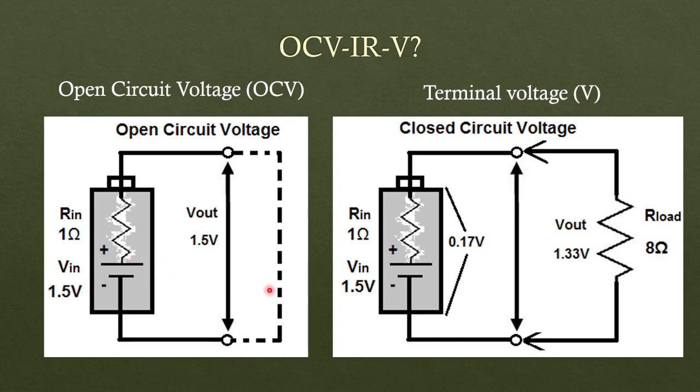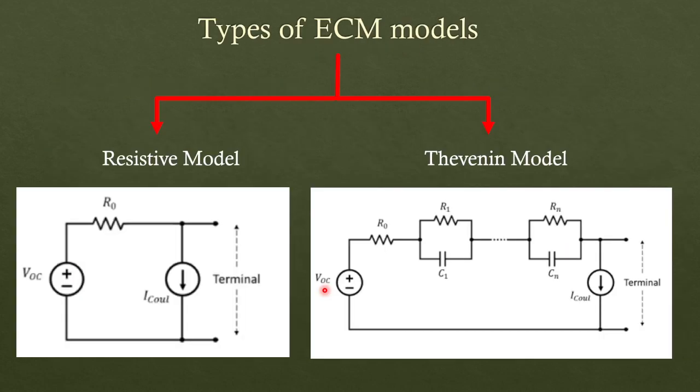Now let's talk about ECM, which is electrical equivalent models or equivalent circuit models of battery. So there are two types of ECM models: one is resistor model, second one is Thevenin. These are the most commonly used ones. Resistive models, by the way, as the name suggests equivalent circuit model, we are trying to replicate a battery.